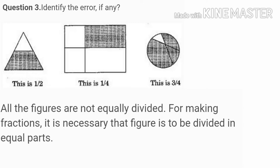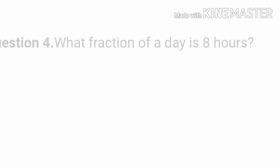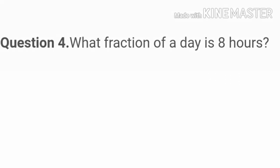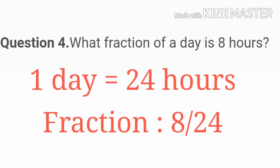Question 4: what fraction of a day is 8 hours? In one day, how many total hours are there? 24 hours. So the formula is: 1 day equals 24 hours. The question asks about 8 hours — so what would be the fraction? It would be 8 upon 24. Very simple, because a hours-to-day relation is there. We know how many hours are in one day, so we just write down the fraction.